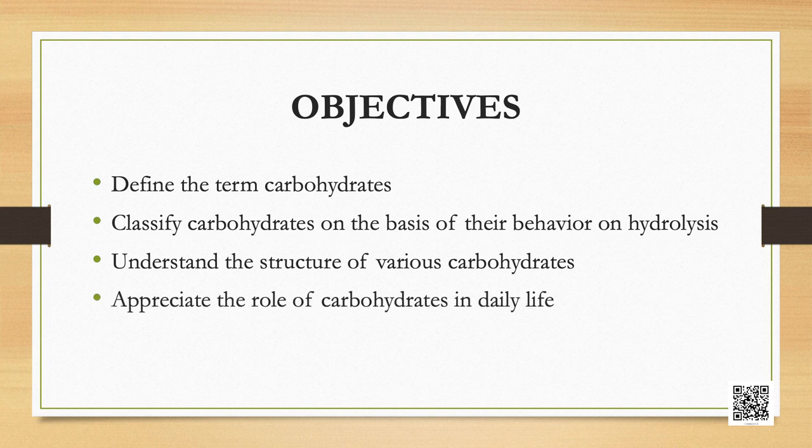Appreciate the role of carbohydrates in daily life. Living systems are made up of various complex biomolecules like carbohydrates, proteins, nucleic acids, and lipids. Carbohydrates are primarily produced by plants and form a very large group of naturally occurring organic compounds. Examples are cane sugar, glucose, and starch. Chemically, carbohydrates may be defined as optically active polyhydroxy aldehydes or ketones, or the compounds which produce such units on hydrolysis. Some carbohydrates which are sweet in taste are called sugars.